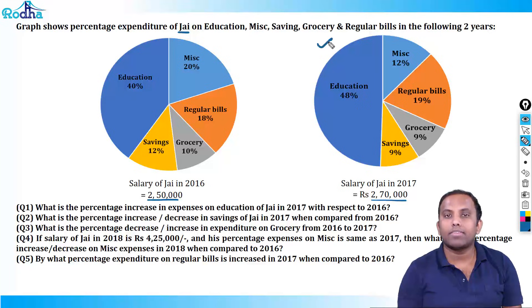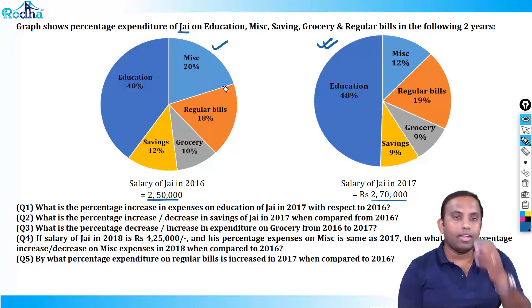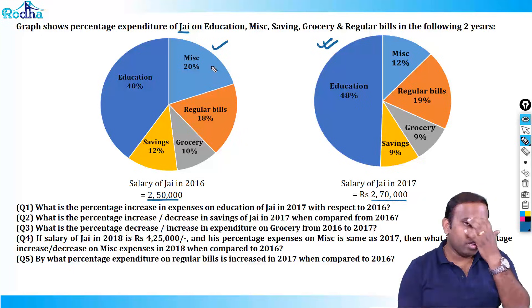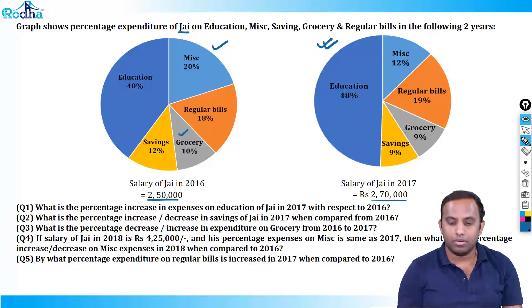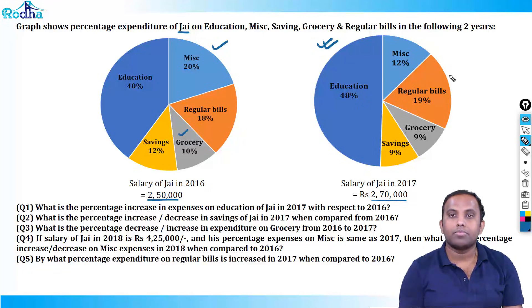This pie chart has a bigger value than this pie chart. Grocery here is 10% and grocery here is 12%.